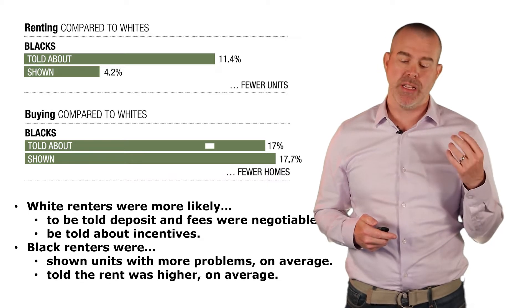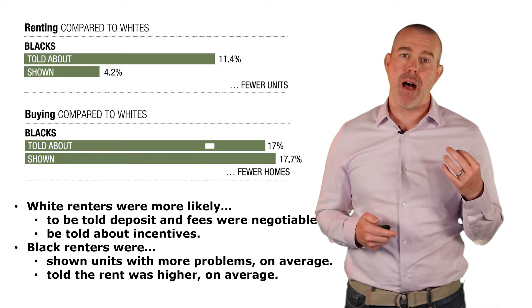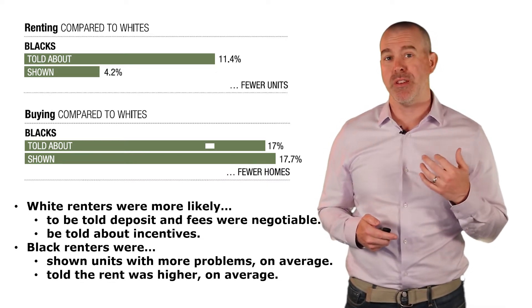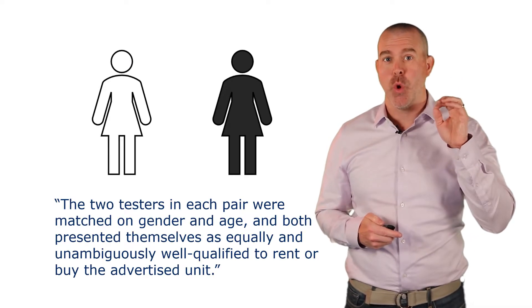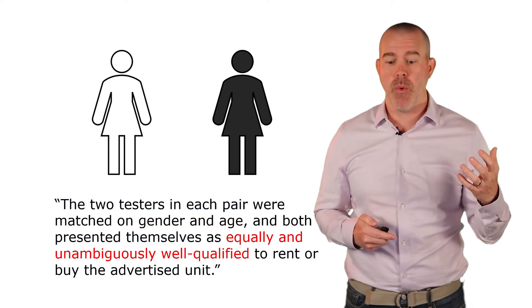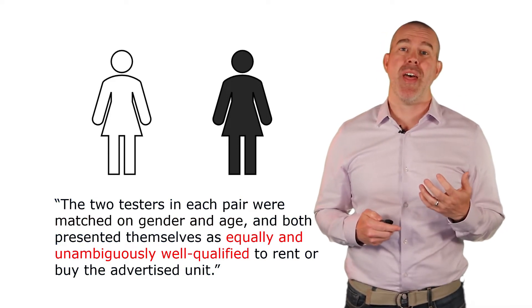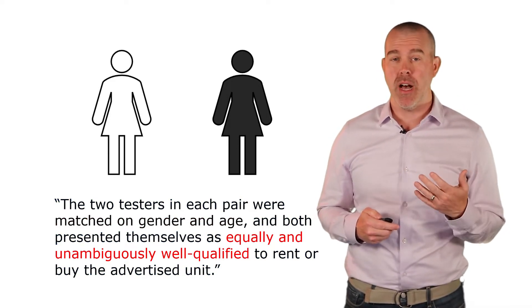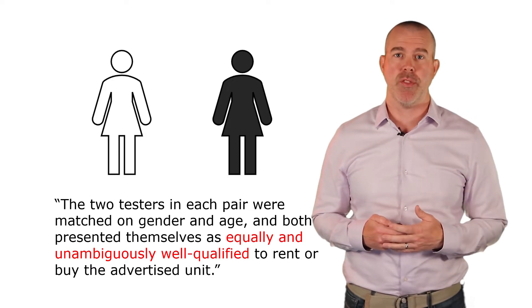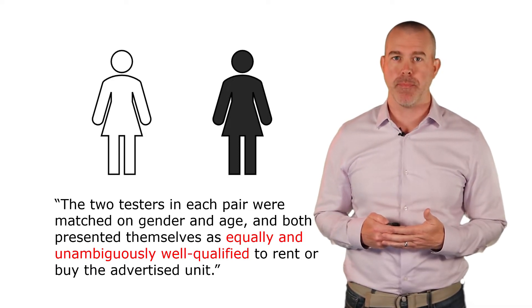Black homebuyers were more likely to be shown units with more problems and also would be told on average that rent was higher. And because they were matched according to gender and age and equally well qualified, we can assume that the difference here was because of the perceived race of the potential renter or homebuyer.